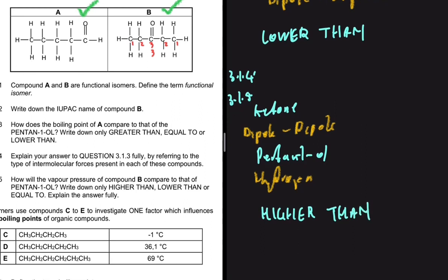What you have to understand is that the weaker the intermolecular forces, the higher the vapor pressure. Pentan-1-ol has stronger intermolecular forces, so it will require more energy to overcome them, and as a consequence it will have a lower vapor pressure compared to the ketone, which will have a higher vapor pressure. What you need to know is: the stronger the intermolecular forces, the higher the boiling point and melting point, but the lower the vapor pressure.